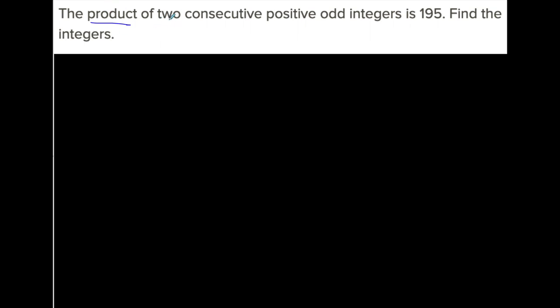The product of two consecutive positive odd integers is 195. Let's talk about what that means. Consecutive means one after the other—two, three, four—consecutive numbers occur one right after the other.